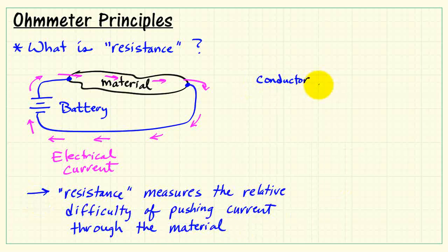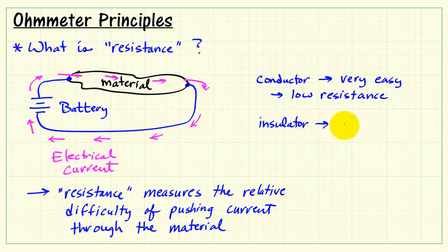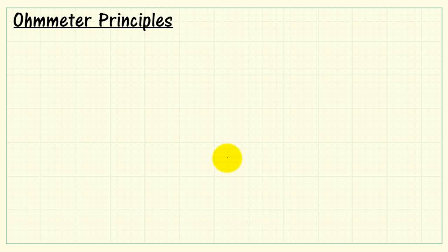Now resistance measures the relative difficulty of pushing current through this material. If we have an electrical conductor, then it's very easy. We would say the material has low resistance when it's a conductor. An insulator means that it's very difficult to push current through it, and we would say that the insulator has high resistance. These are the extremes, the conductor and the insulator, and materials can be anywhere in between.